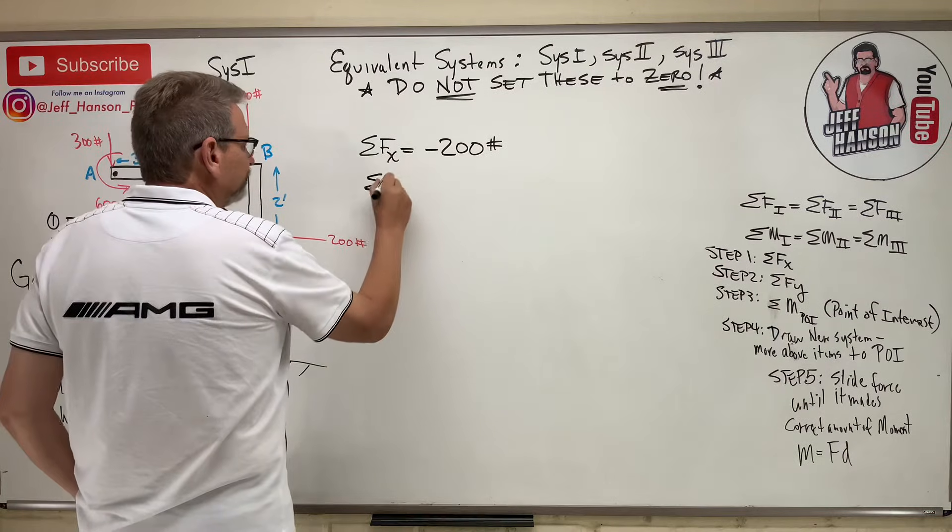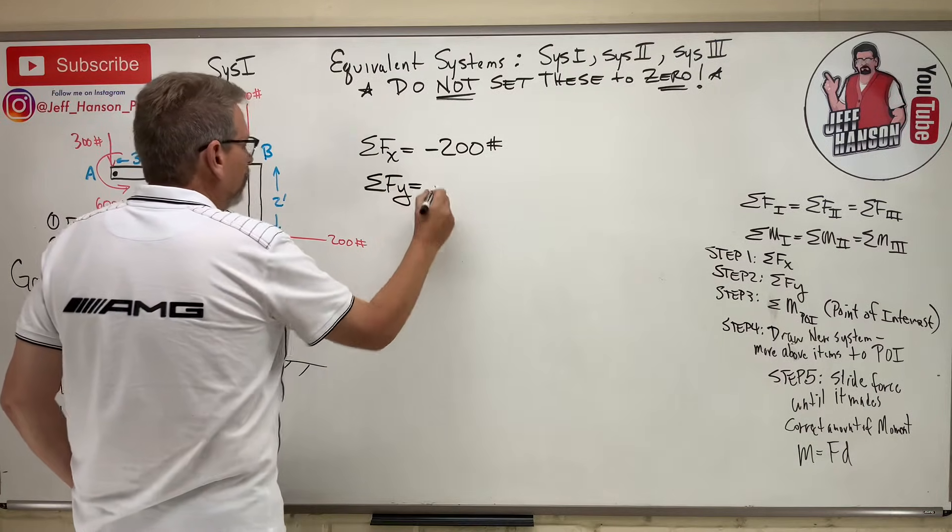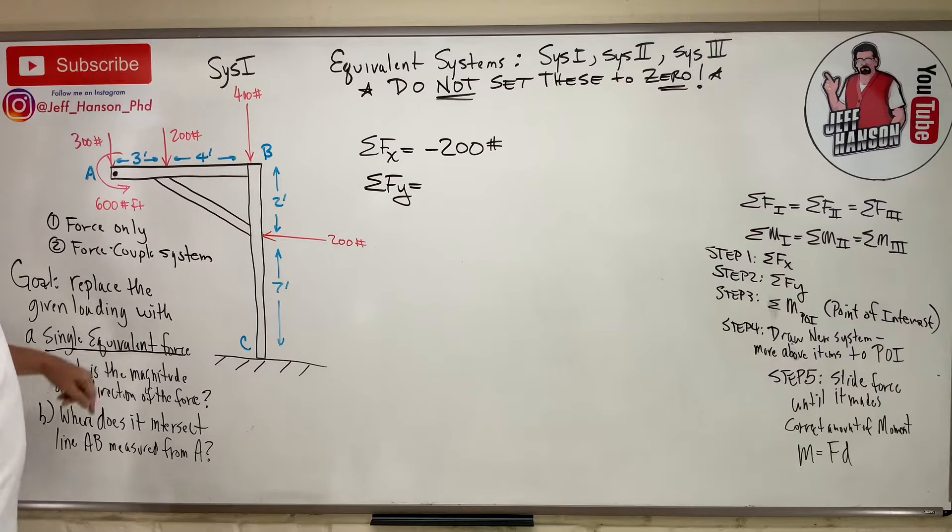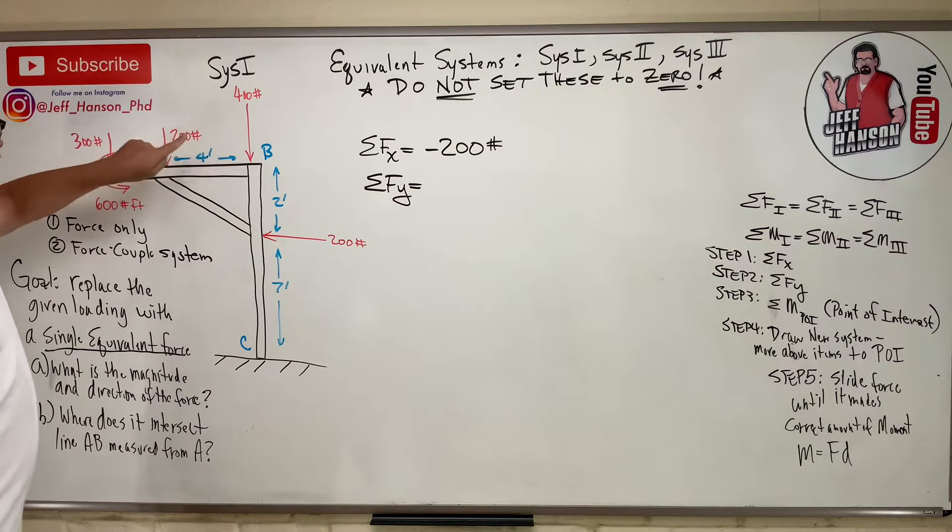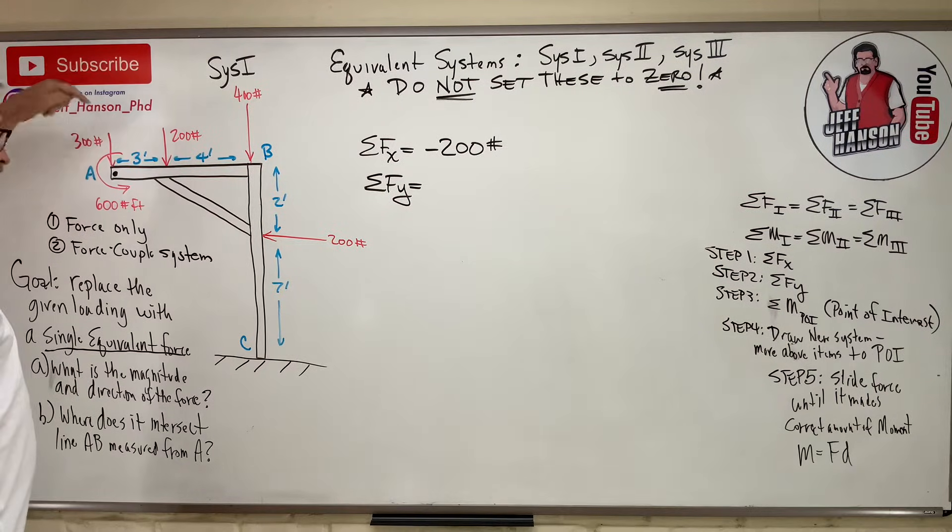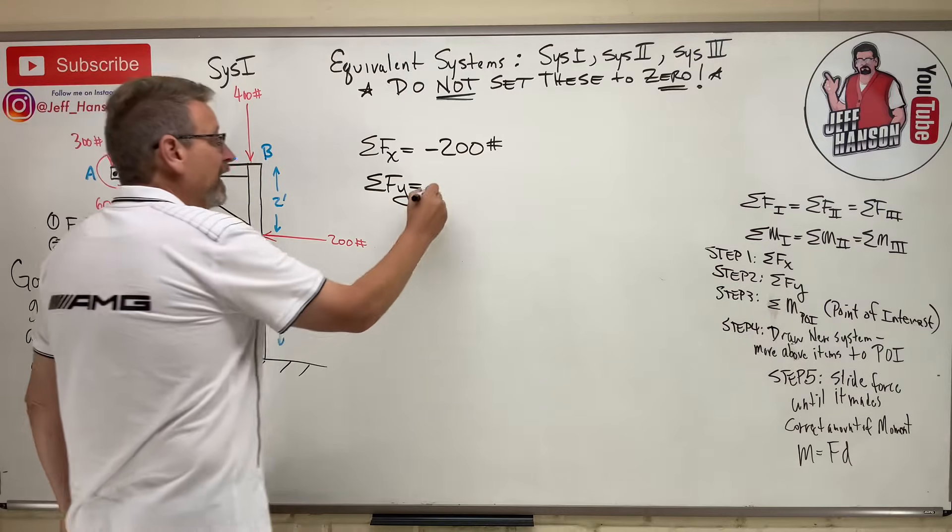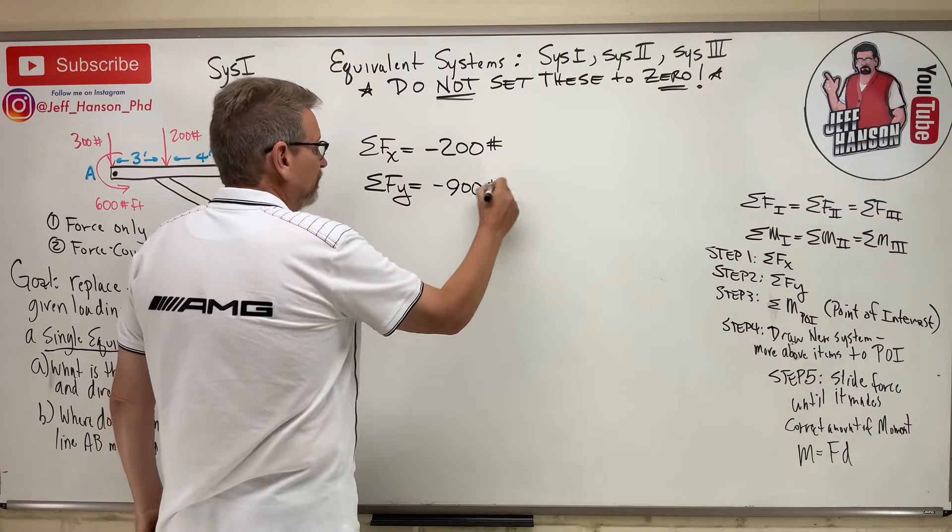Step 2, sum the forces in the y. What do we have in the y? Well, I got 400 down, 600 down, 900 down. Minus 900 pounds.